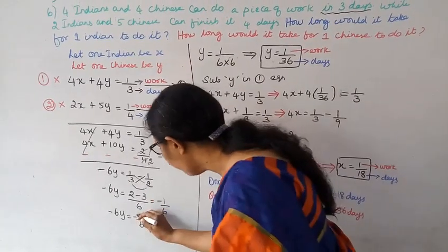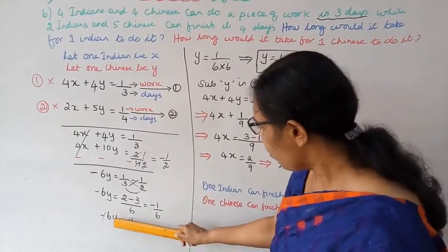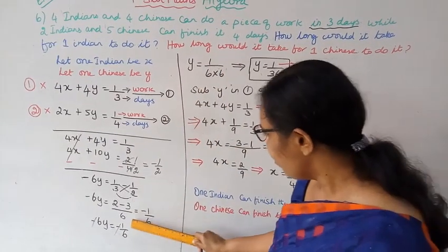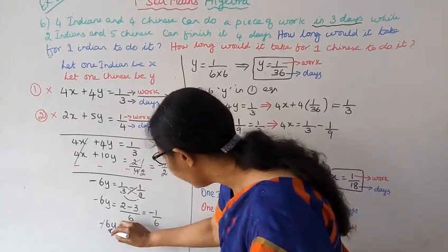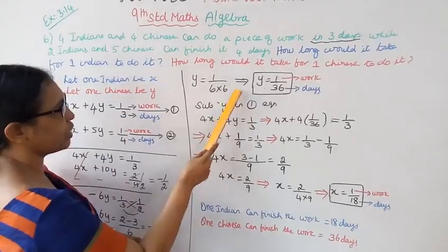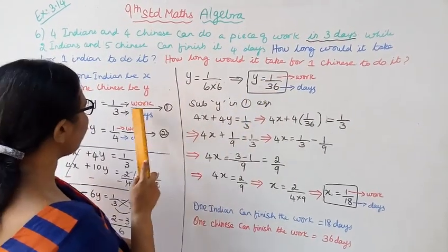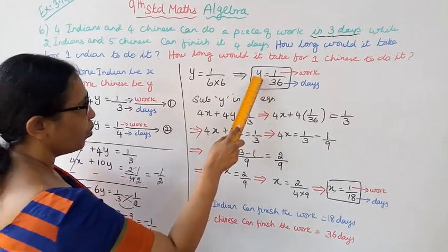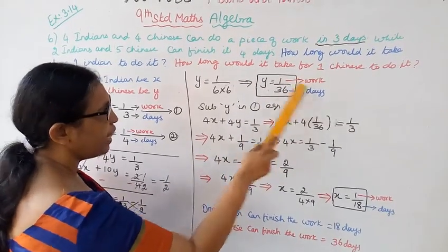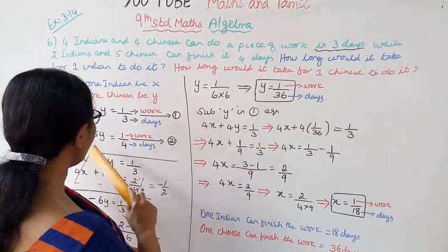Cross multiply to find the LCM. The LCM of 3 and 2 is 6. So 2 minus 3 equals minus 1. Minus 6y equals minus 1 by 6. Cancel the minus signs: 6y equals 1 by 6. Therefore y equals 1 divided by 36. The Chinese worker takes 36 days.